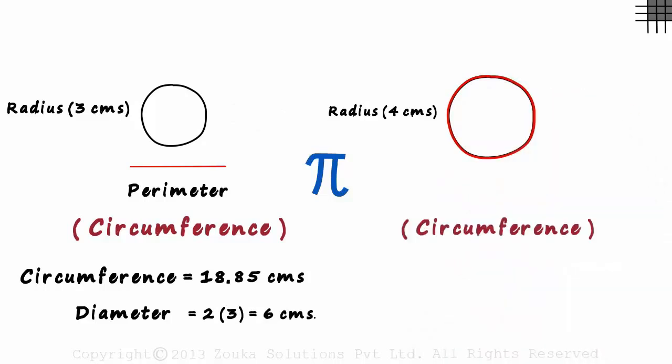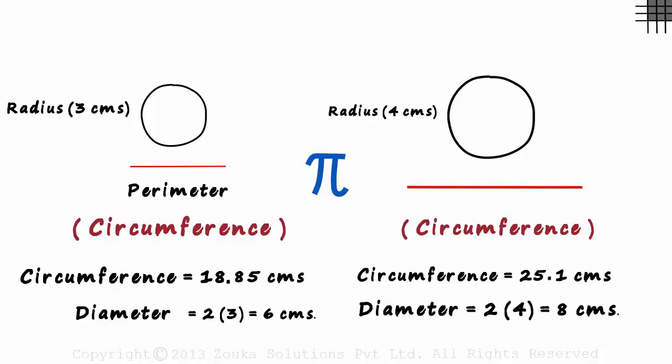This time too, we measure the circumference. For this circle, we get the circumference as 25.1 centimeters. And the diameter will be twice its radius which equals 8 centimeters.